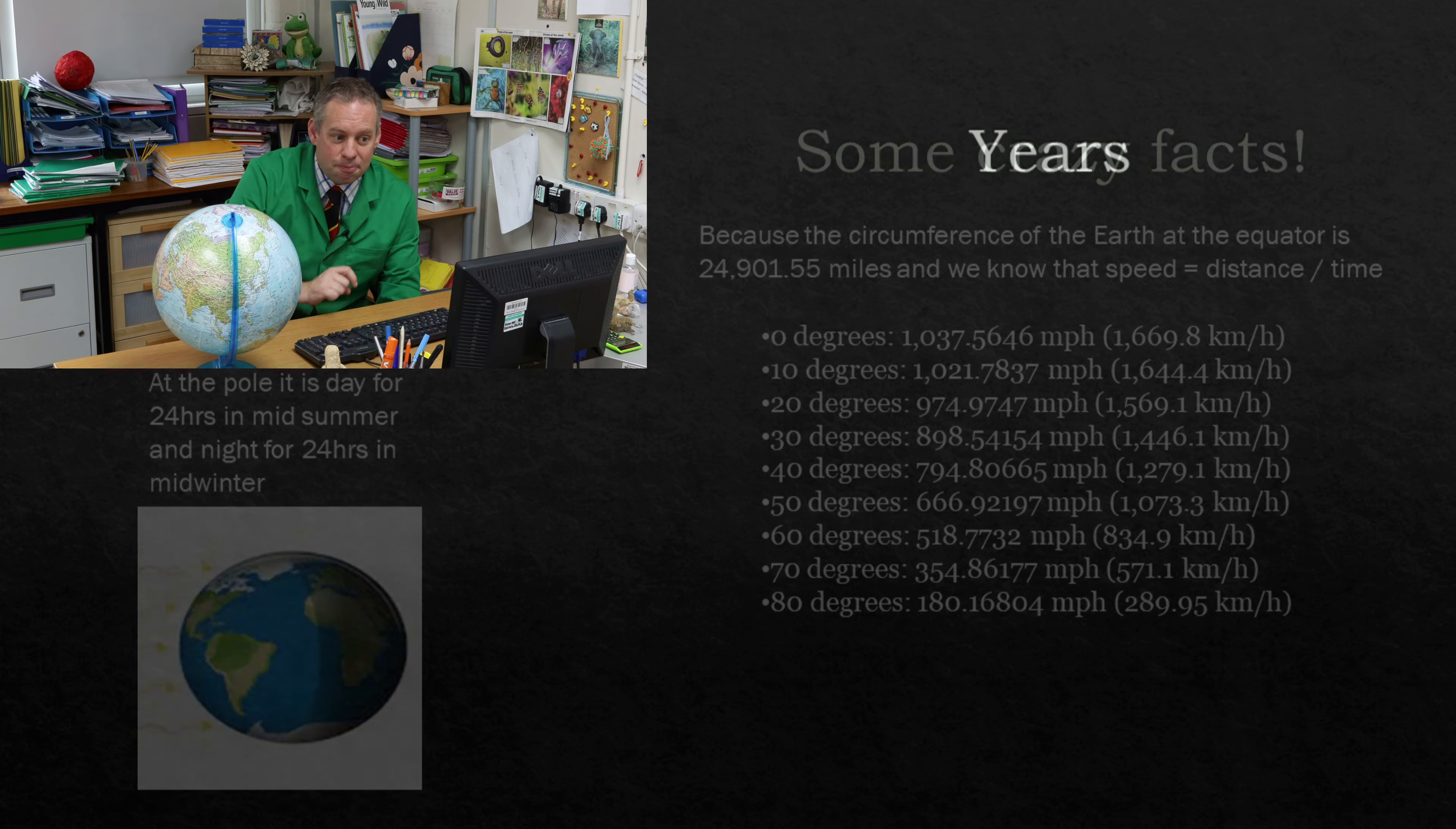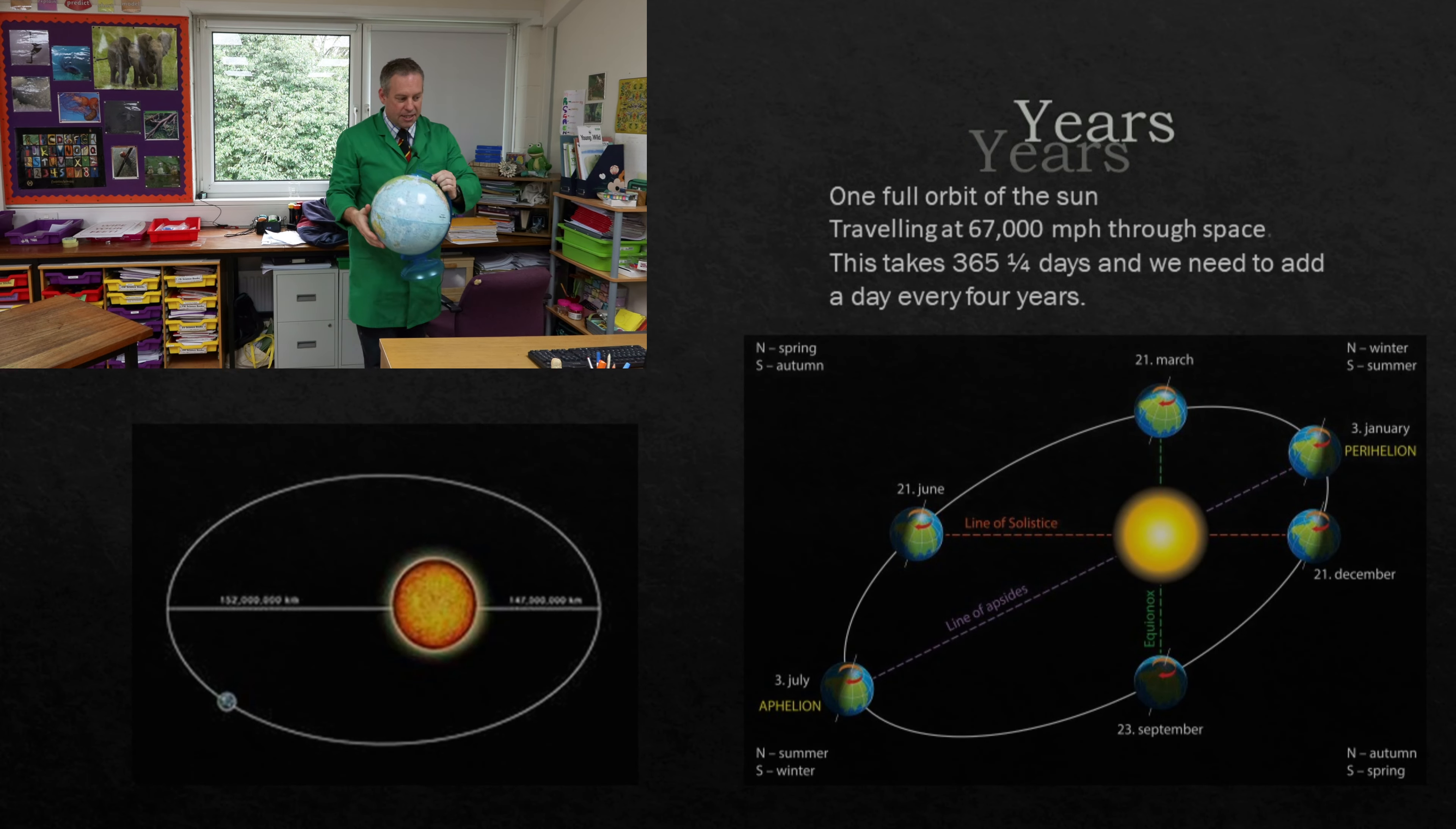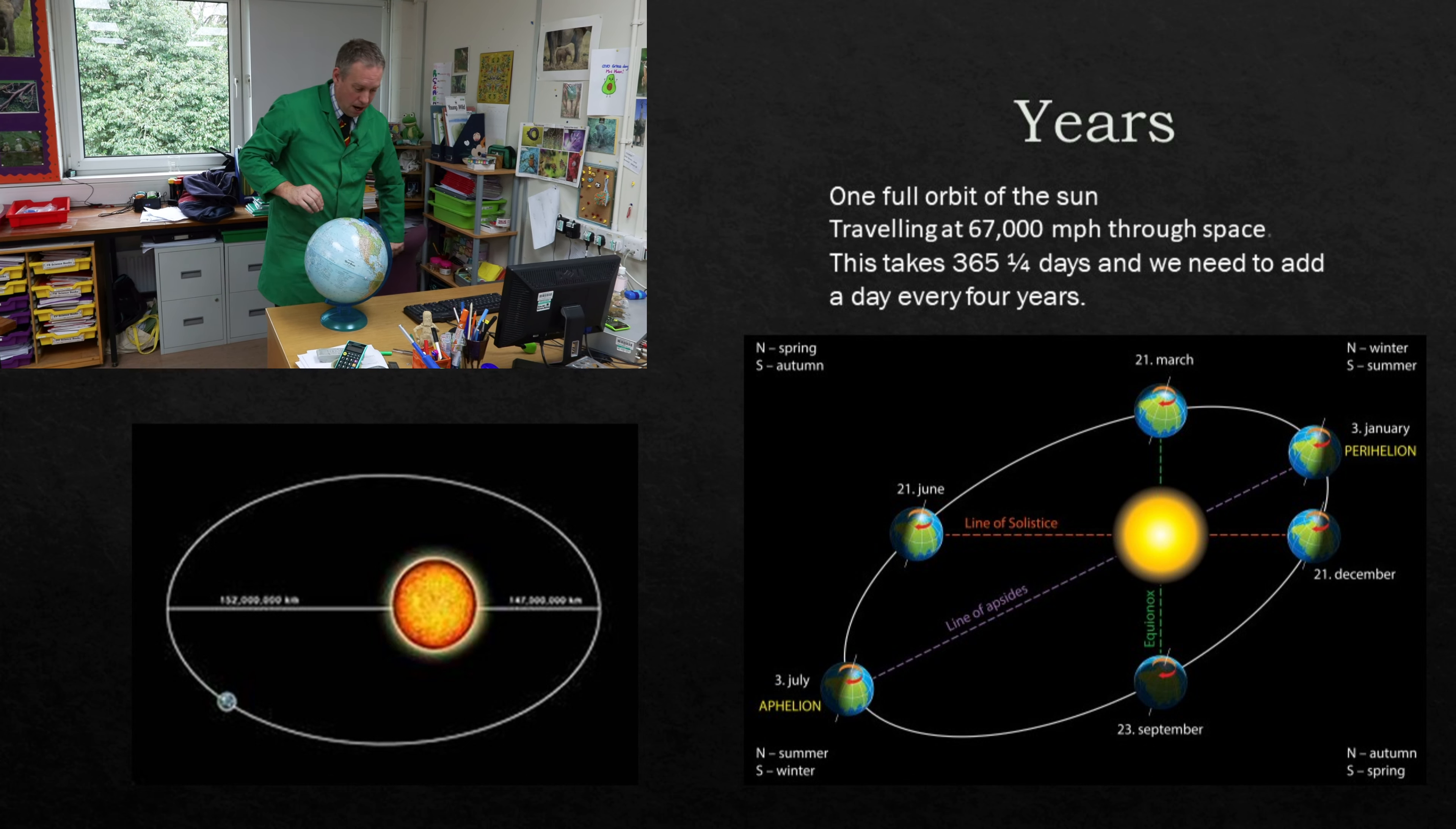Let's move on to years. One year, we've done spinning. One year is a complete orbit of the sun. So imagine the sun's in the middle. It's one complete orbit. And this takes 365 and a quarter days. They're not linked. The days and years are not linked. Now the quarter means, I think you know, that every four years we have to add a year. So a leap year comes from the fact that it takes that time to go round.